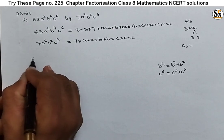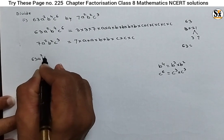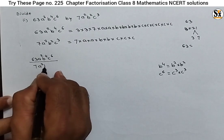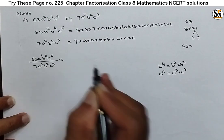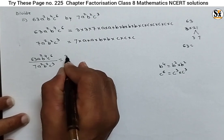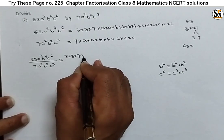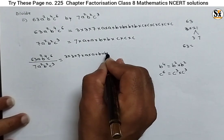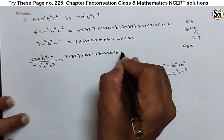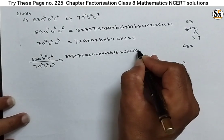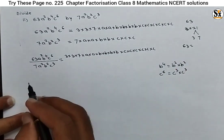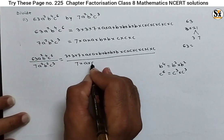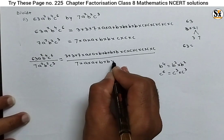Now take the division: 63·a²·b⁴·c⁶ divided by 7·a²·b²·c³ is equal to — write all these factors: 3×3×7 (factors of 63), then a×a (factors of a²), then b four times (b⁴), then c six times (c⁶), all divided by 7, then a×a, then b×b, then c×c×c.